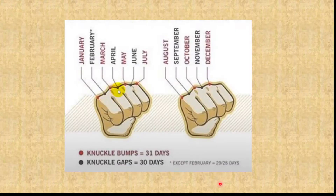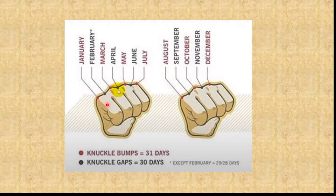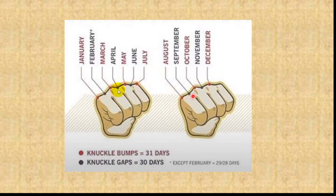If you don't have a calendar handy, you can use your fist — the knuckle bumps on your hand. All knuckle bumps represent 31 days, while the spaces between them represent 30 days. Starting from January: January, February, March, April, May — then it wraps around — August, September through December. The months on the knuckle bumps have 31 days; the spaces have 30 days. Of course, February is the exception — it can be 28 or 29 days.